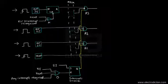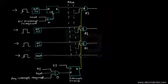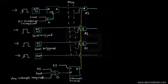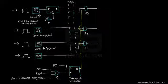On the other hand, for the RST interrupts, RST 7.5 is a positive edge triggered interrupt pin, whereas RST 6.5 and RST 5.5 are level triggered interrupts. RST 7.5 is an edge triggered — specifically a positive edge triggered — interrupt, while RST 6.5 and 5.5 are level triggered interrupts.